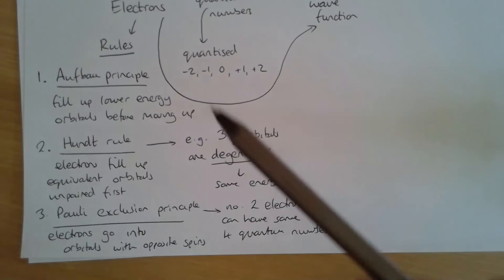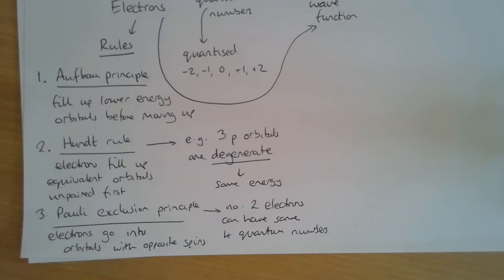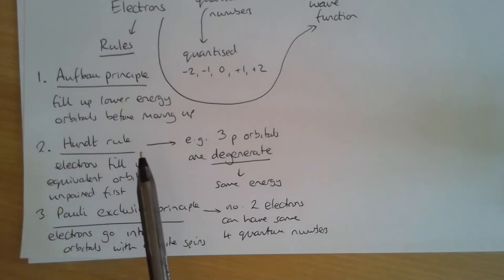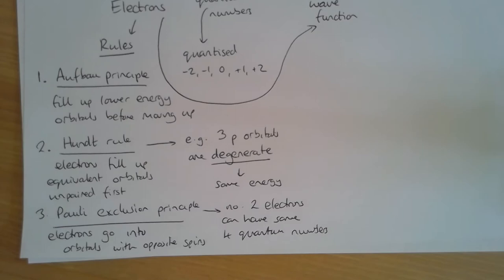To review: the Aufbau principle states we fill up lower energy orbitals before moving to higher energy orbitals. Hund's rule says electrons filling equivalent energy orbitals fill them unpaired before pairing — those equivalent energy orbitals are called degenerate, meaning they have the same energy. The Pauli exclusion principle means electrons go into orbitals with opposite spins because no two electrons can have the same four quantum numbers.